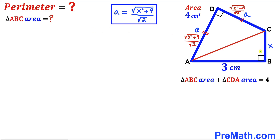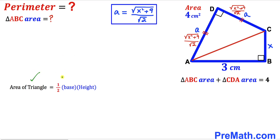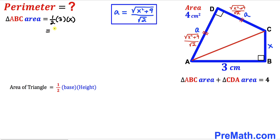Next we calculate the area of triangle ABC using the formula: area = ½ × base × height. The base of this triangle is 3 and the height is lowercase x, so the area of triangle ABC = ½ × 3 × x = 3x/2.